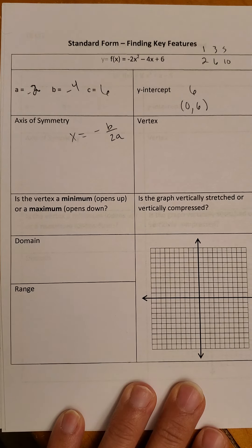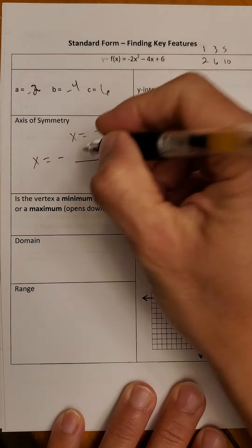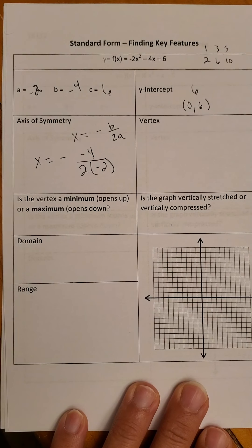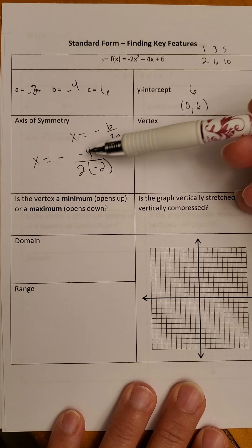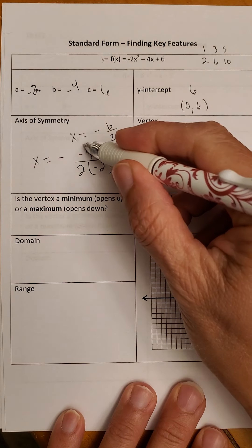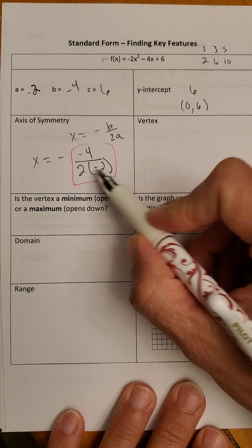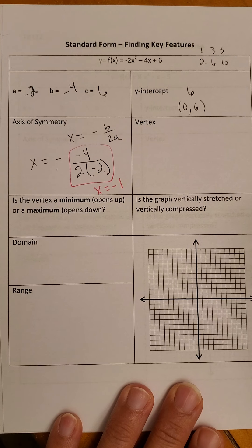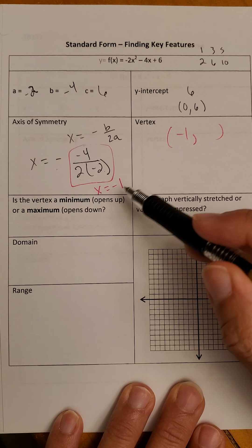What is the axis of symmetry? The formula says X equals negative B over 2A. So X equals negative, then B was negative 4, and 2 times A is negative 2. Without the leading negative sign, that's negative 4 divided by negative 4, which equals 1. But then I've got that negative out front, so my axis of symmetry is actually negative 1.